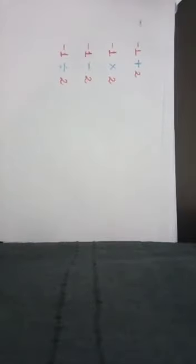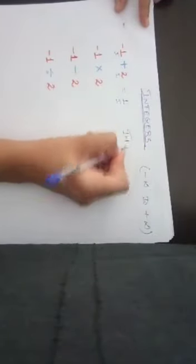Now let's see if integers follow closure property and if yes, under which circumstances. Integers range is from minus infinity to plus infinity. Is minus 1 an integer? Yes. Is 2 an integer? Yes. Minus 1 plus 2 gives us 1. Is 1 an integer? Yes. Integer plus integer gives us an integer, so we say integers follow closure property — CP — under addition.